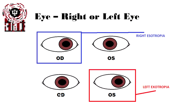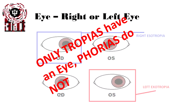Now that we've discussed tropias and phorias, it could be one specific eye that has the problem. So whenever we label something, we have to label it based upon the eye that has the problem. In the upper images in blue, the right eye shows an esotropia. In red, on the bottom, we see a left exotropia. The key point is that you have to have a tropia to label a specific eye. Phorias do not have an eye labeled to them — phorias are in both eyes equally, whereas tropias have a specific eye which is deviating.